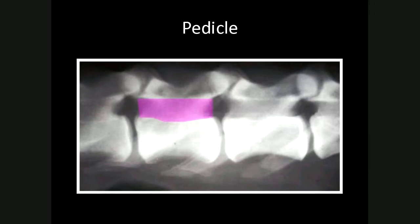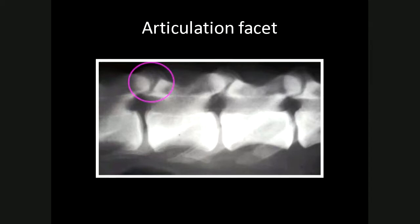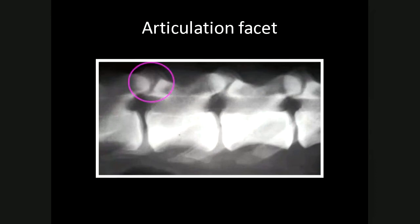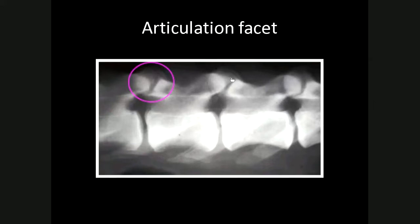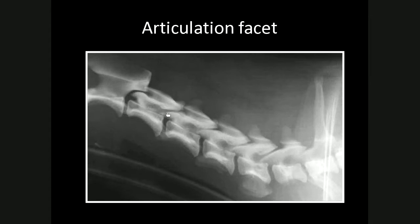The pedicle consists of the thinner vertical bones that form the lateral borders of the vertebral canal. The articulation facets form the true joints of the vertebral column, with articular cartilage, synovial lining, and synovial fluid. Their orientation differs depending on the part of the spine. In the lumbar spine, the articulation facets are medial and lateral, creating a joint space seen as a curved radiolucent line. In the cervical spine, the articular surfaces are dorsal and ventral, so the joint space runs obliquely across the vertebral canal — seen as oblique radiolucent lines on the lateral radiograph.